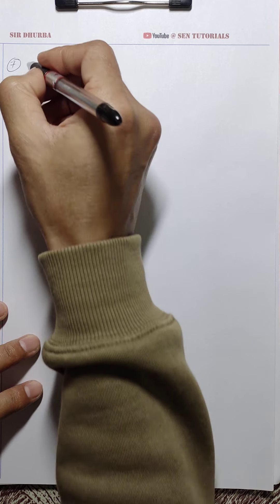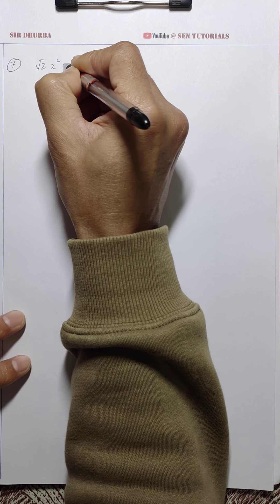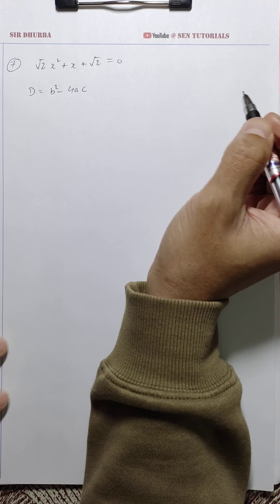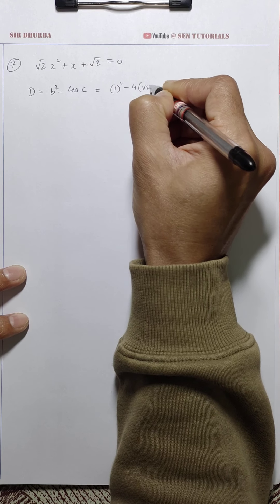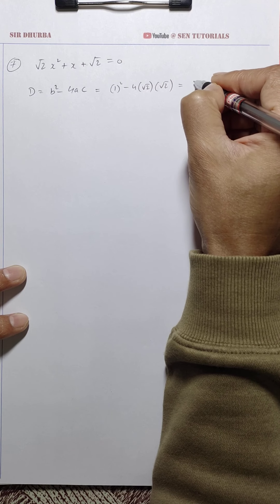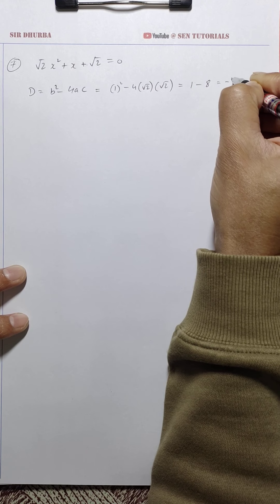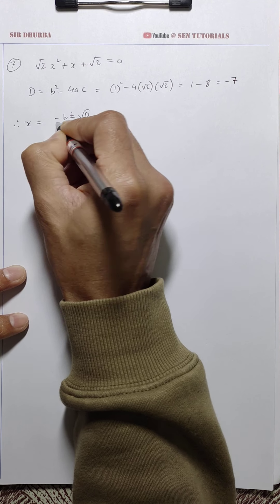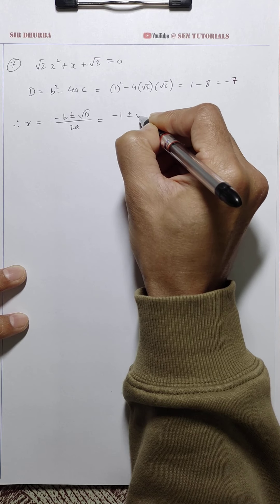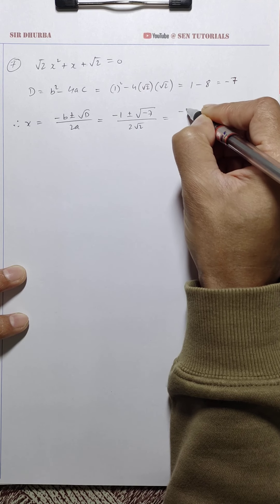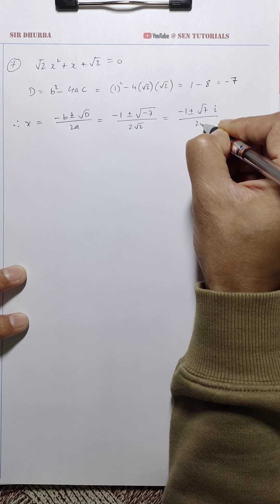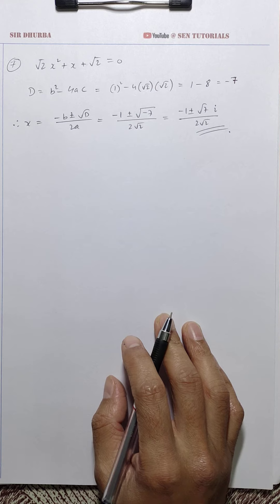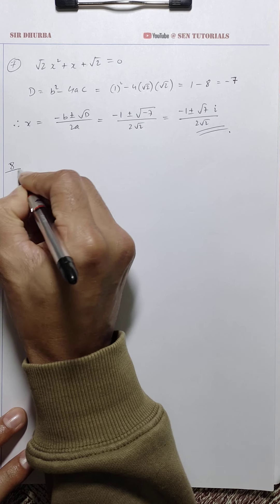Question 7: √2 x² + x + √2 = 0. D = b² - 4ac = 1² - 4(√2)(√2) = 1 - 4(2) = 1 - 8 = -7. Therefore x = (-b ± √D) / 2a = (-1 ± √(-7)) / (2√2) = (-1 ± √7 i) / (2√2).